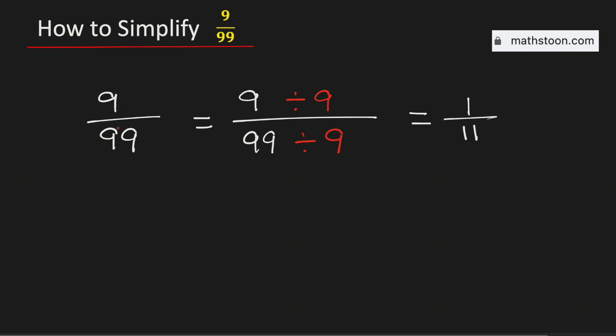So, the fraction 9 over 99 simplified is equal to 1 over 11. And it is in its lowest terms. And this is our final answer.